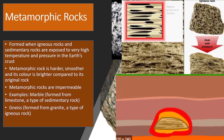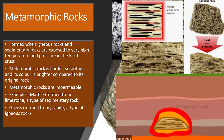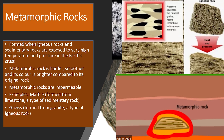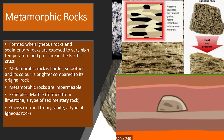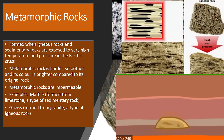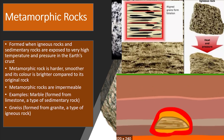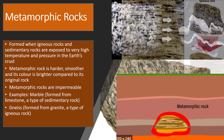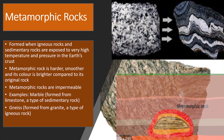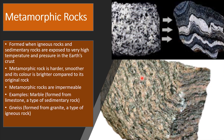Examples of metamorphic rocks are marble. Marble is formed from limestone, a type of sedimentary rock. The second example of metamorphic rock is gneiss. Gneiss is formed from granite, a type of igneous rock.